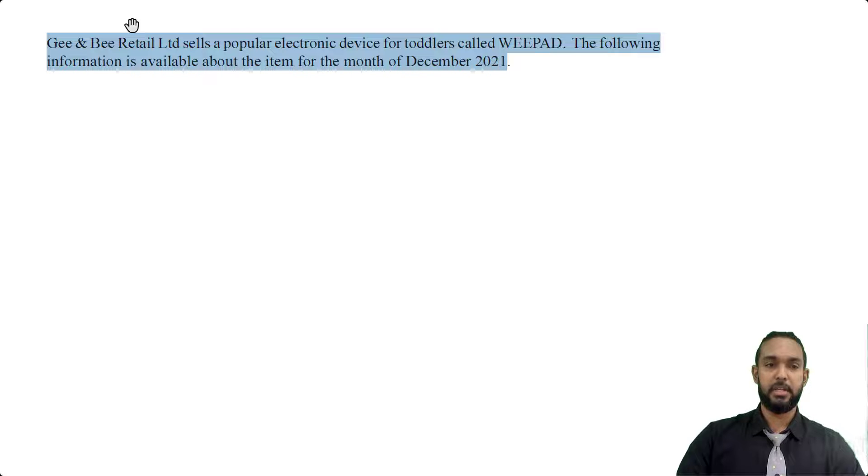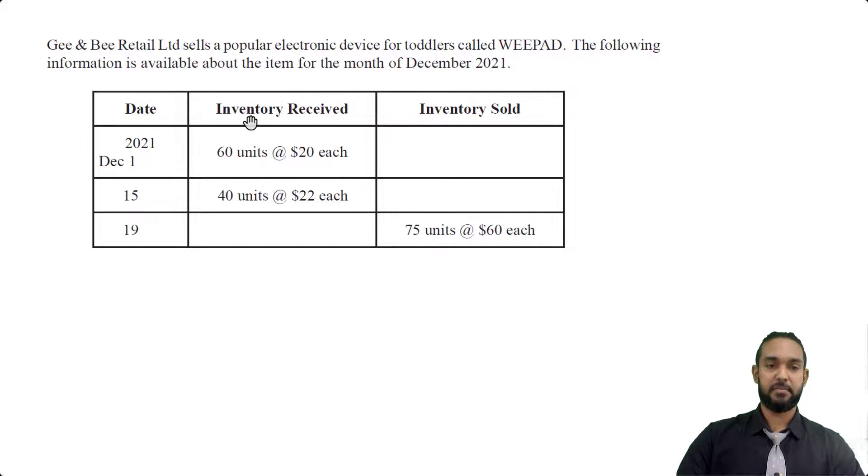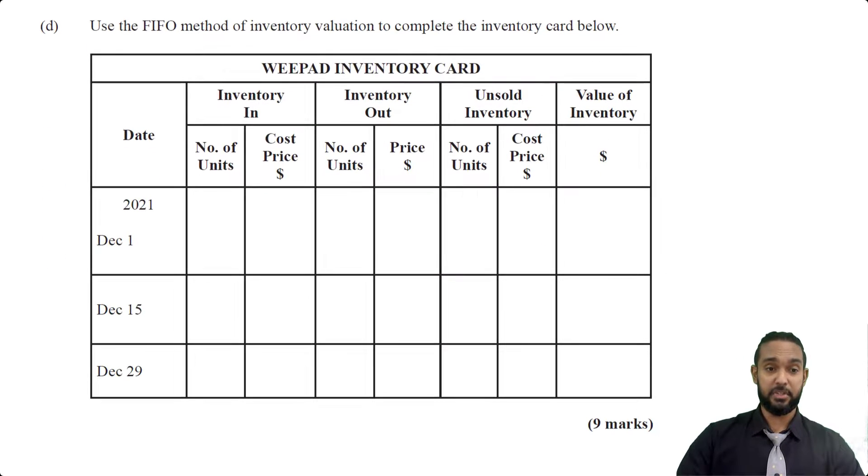So GNB Retail Limited sells a popular electronic device for toddlers called Weepad. The following information is available about the item for the month of December 2021. So we have date, inventory received, inventory sold. So December 1st, 15th and 19th, inventory received as purchases. So 60 units at 20 each and 40 units at 22 each. And inventory sold, 75 units at $60 each. Now let's scroll down and take a look at what they want us to do.